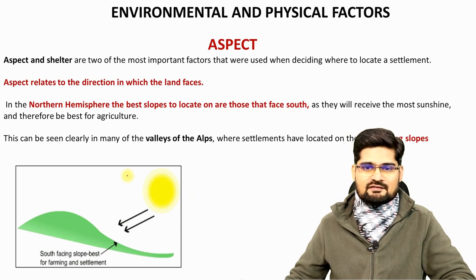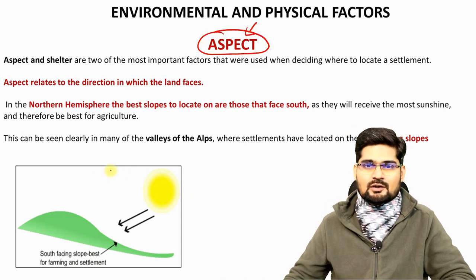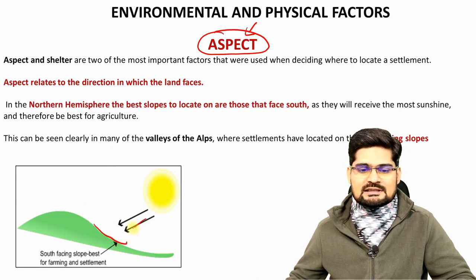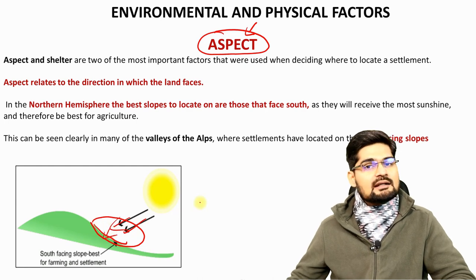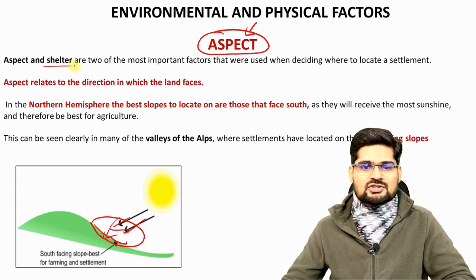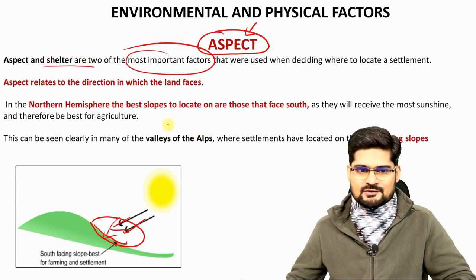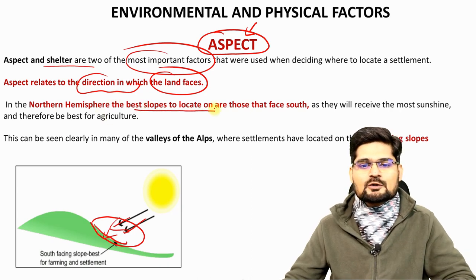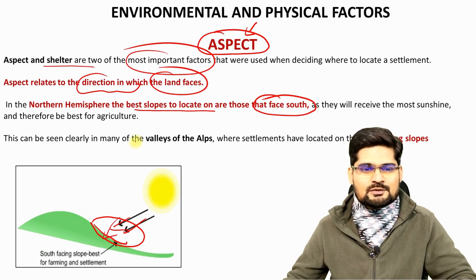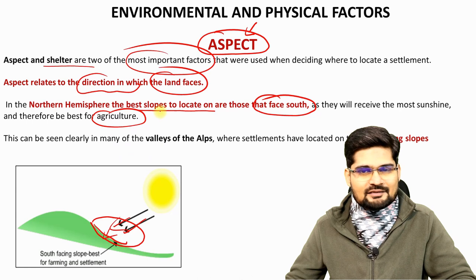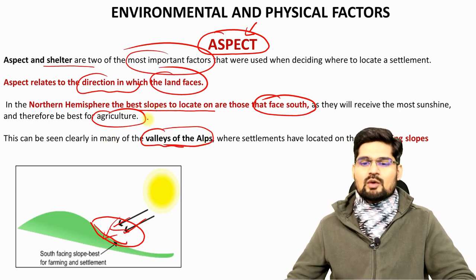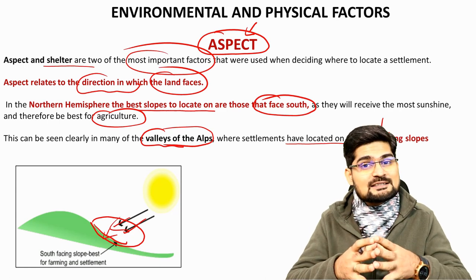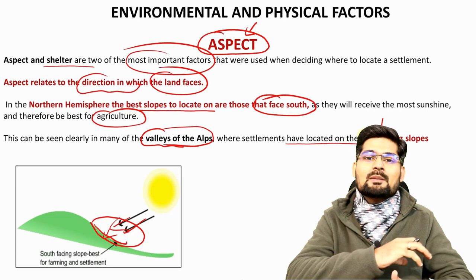Now let's elaborate on environmental and physical factors. One important factor is aspect — the direction of the slope. Where sunshine is greater, that area has advantages for settlement. Aspect relates to the direction in which land faces. In the northern hemisphere, the best slopes to settle are those facing south, as they receive maximum sunshine and are best for agriculture, forestry and other economic activities. In the valley of the Alps, settlements have been located on south-facing slopes for this reason.